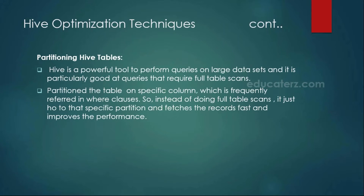Another technique is partitioning the Hive tables. As we discussed in Hive partitioning, partitioning is very powerful, especially if you are frequently executing a query on a particular column. Instead of reading the entire table scan, if you write a query like 'country equals US,' it simply goes to that particular partition. A partition is nothing but a subfolder created internally — it just reads directly from there. That is how partitioning improves performance by avoiding full table scans. You can add partitioning on any column, but choose carefully which column is frequently used.